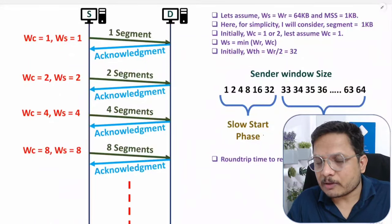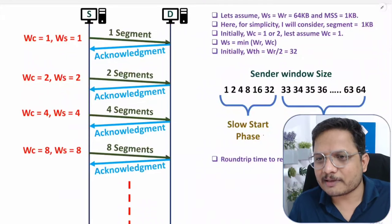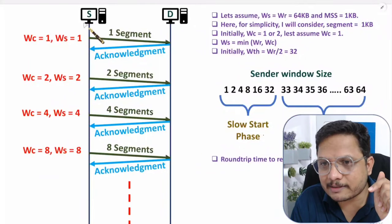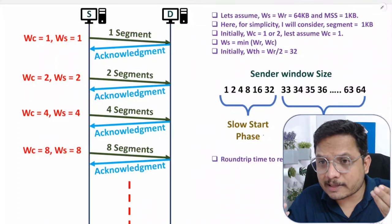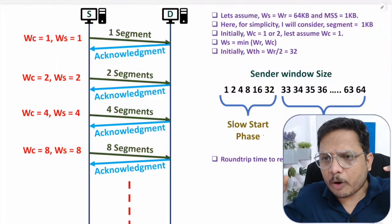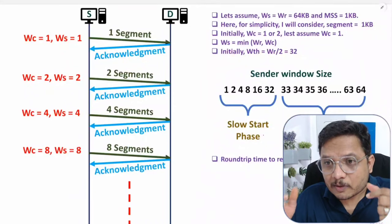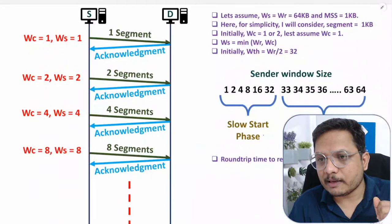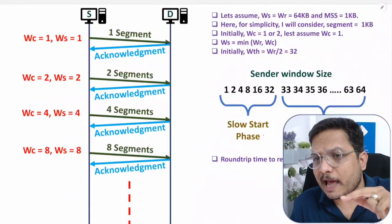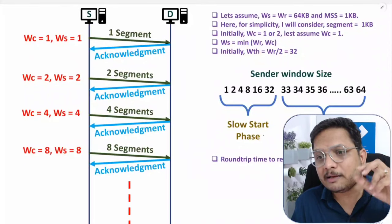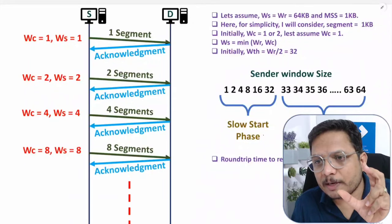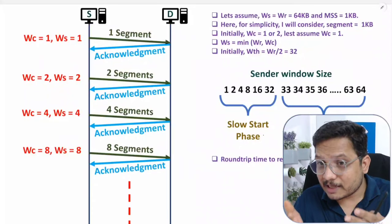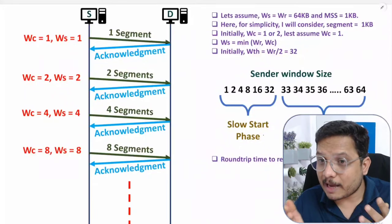To summarize: congestion is controlled by managing the sender's transmission rate. If the sender transmits too much data, congestion can occur. By lowering the scale of the window we lower the data transmission and thereby control congestion. The sender window equals the minimum of the congestion window and the receiver window. That is how congestion control works in TCP. I hope you understood — if you have any questions please note them in the comment section. Thank you for watching.